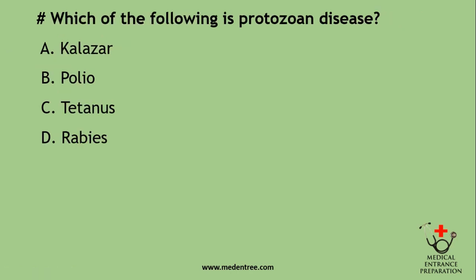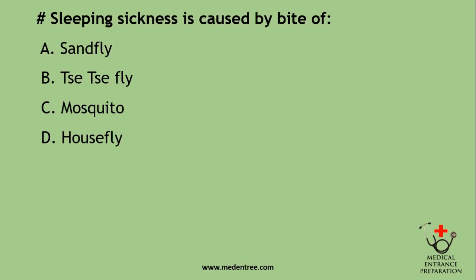Which of the following is a protozoan disease? Kalazar, polio, tetanus, or rabies? The correct answer is Kalazar, caused by Leishmania donovani, which is a protozoan. Polio is a viral disease caused by poliovirus. Tetanus is caused by Clostridium tetani, which is a bacterium. Rabies is also a viral disease. So the correct answer is Kalazar.